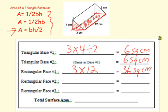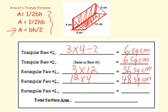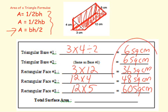Now for the back rectangle: the height is 4 and the length is 12, so 12 times 4 equals 48 square centimeters. And then this top piece — that's also a rectangle — so that's 12 times 5, which gives 60 square centimeters. To find the surface area of this triangular prism, I would just add all of these together.